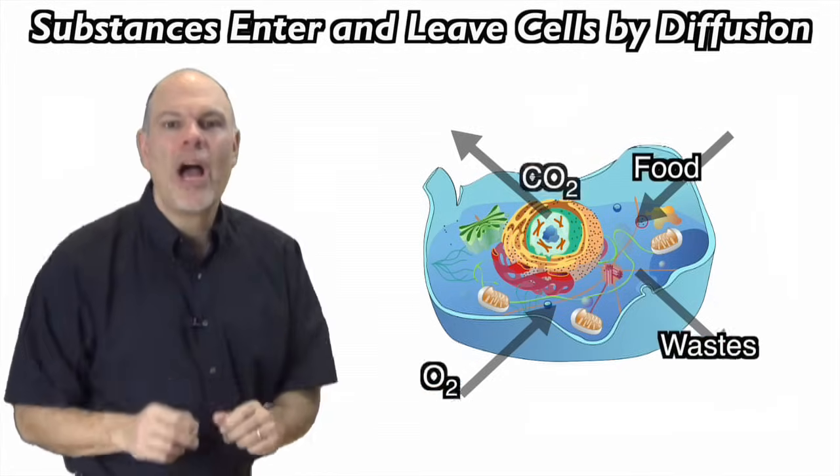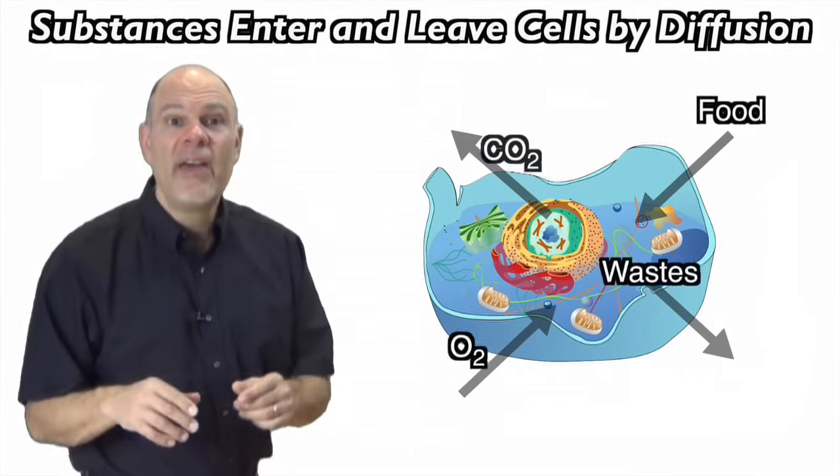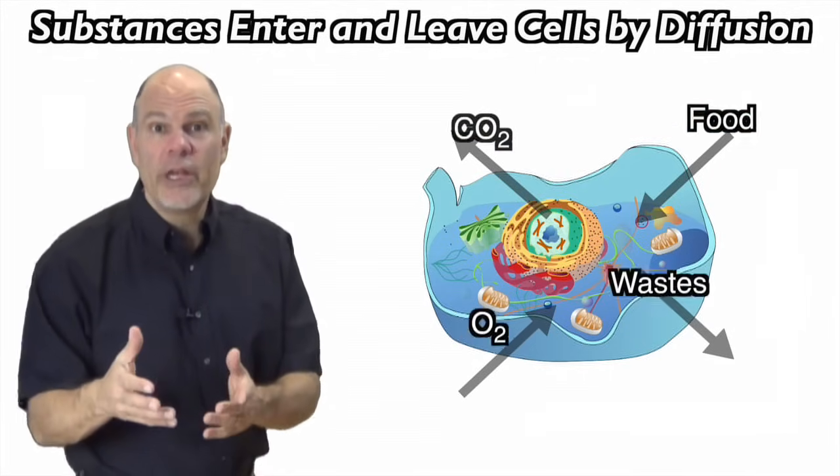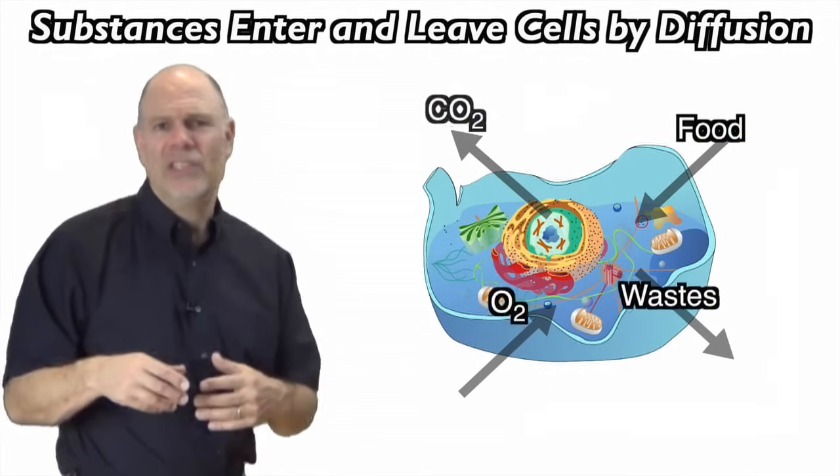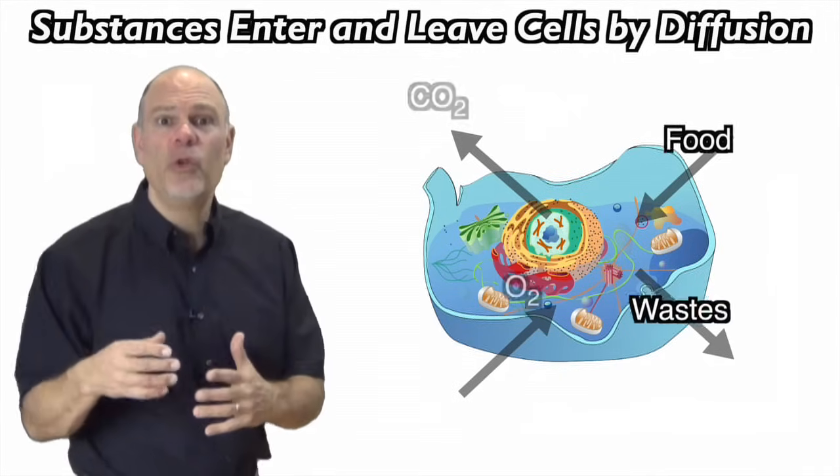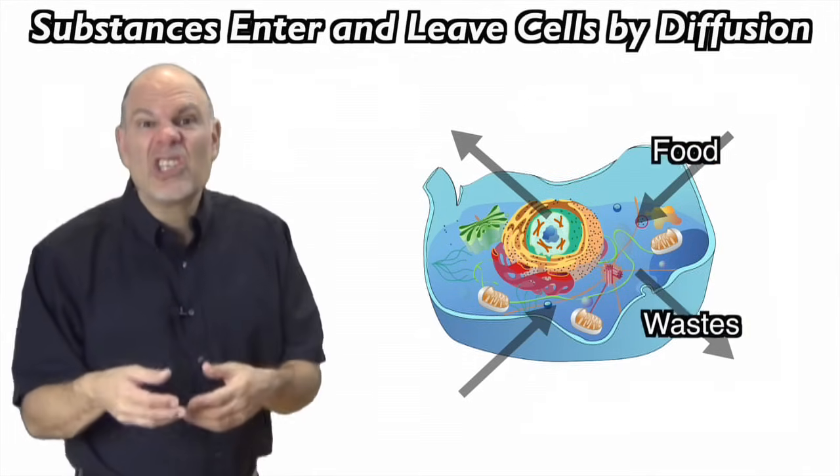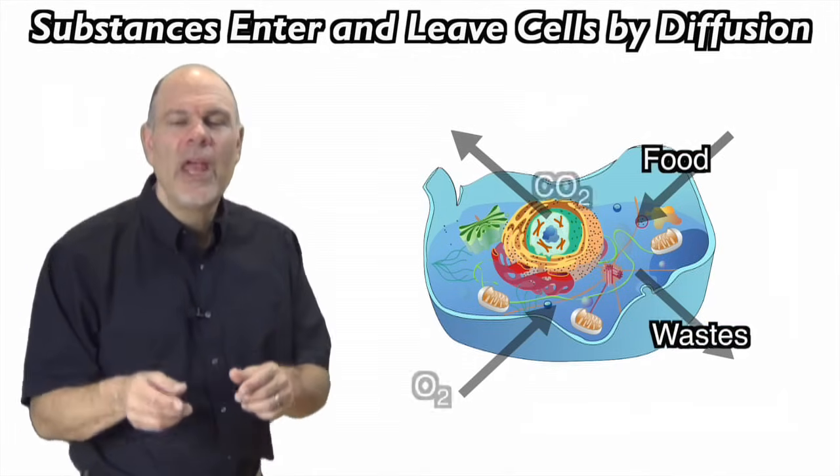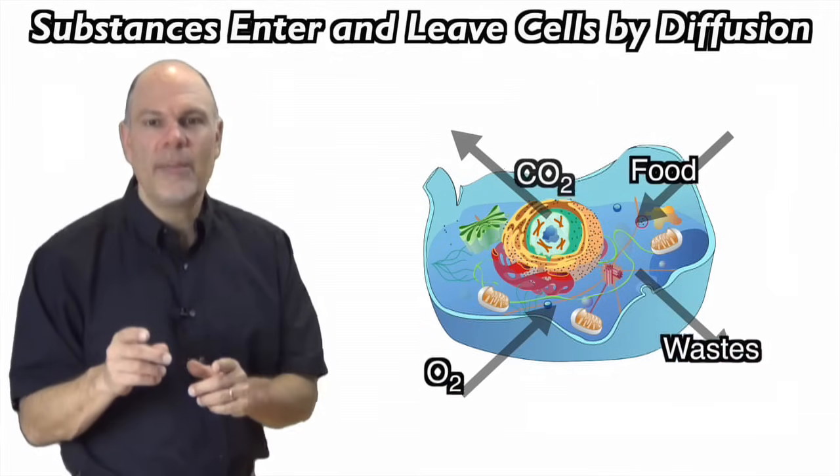And that's why cells are small. Cells, to stay alive, have to exchange materials with their environment. For most cells, that means that things like oxygen and food need to go in, and carbon dioxide and other wastes need to come out. That exchange is largely by diffusion.